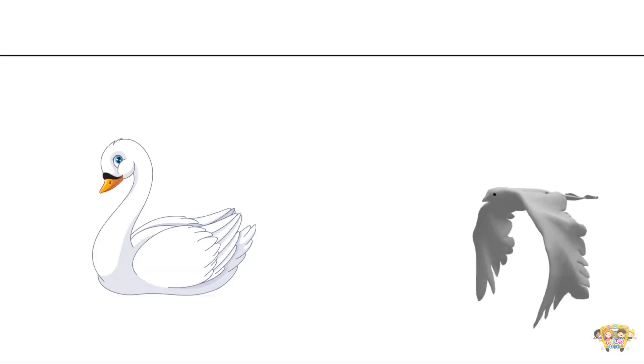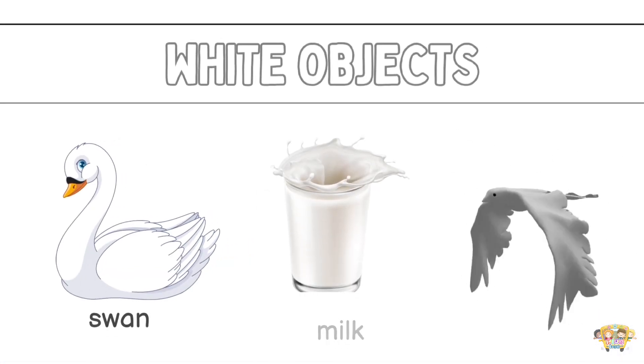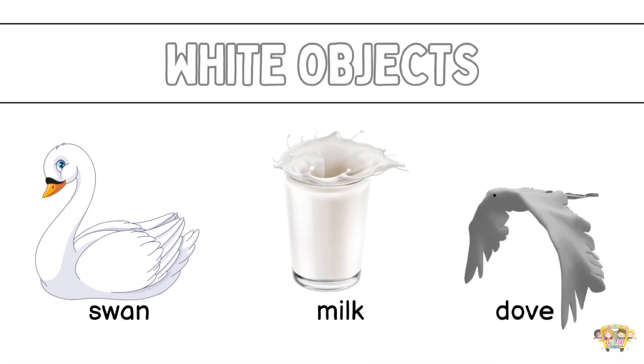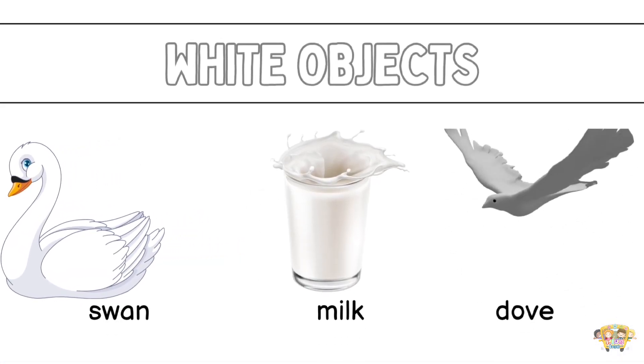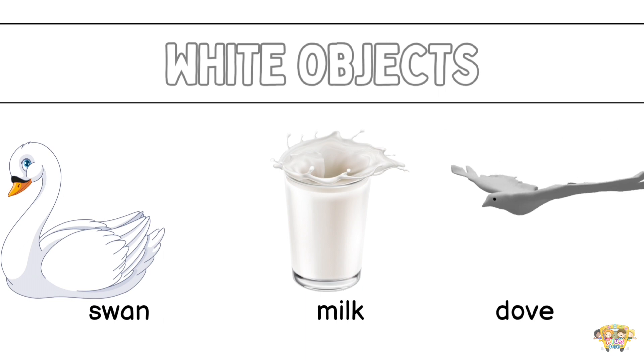Moving on to the color white. Objects that are white are swan, milk and dove.